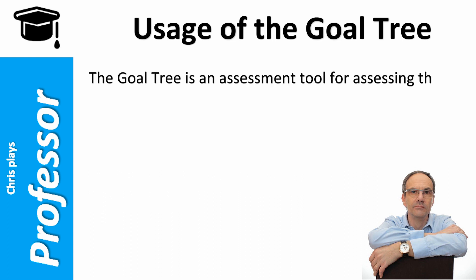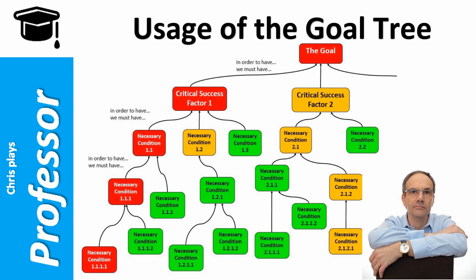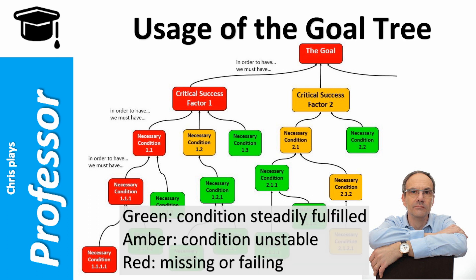Next, the goal tree is an assessment tool for assessing the current situation against the benchmark. It is the yardstick against which assessing the system's current situation.